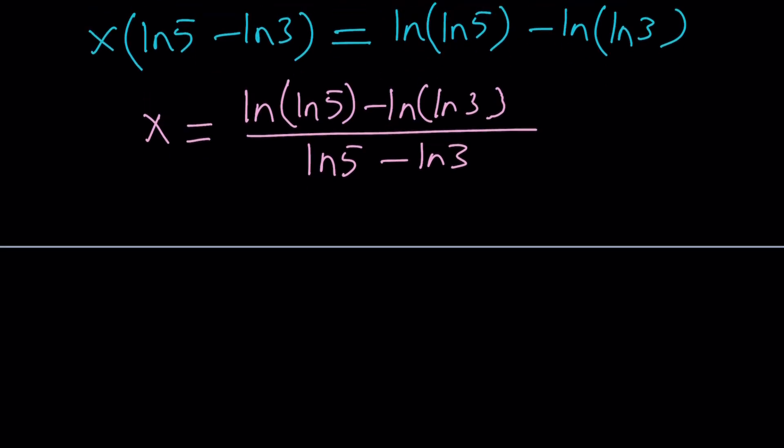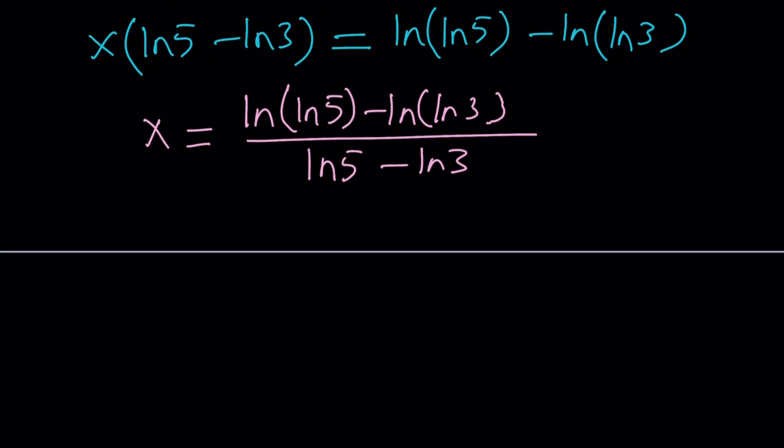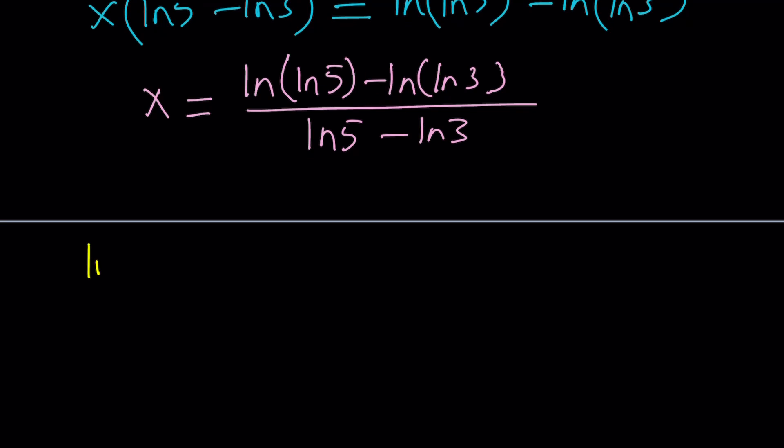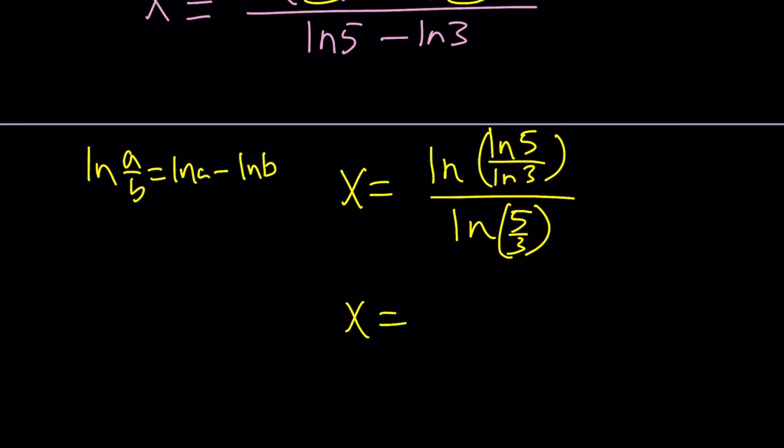Now, obviously, a couple of different things can be done here. For example, we have the difference of 2 ln, so we can kind of turn it into a quotient, right? By the quotient rule, and that is ln A over B is ln A minus ln B. If you use that backwards, this is going to be your A, this is going to be your B. So you're going to get something like this: ln 5 over ln 3, and then that is divided by ln 5 over 3. I don't know if this is a better way to express it.